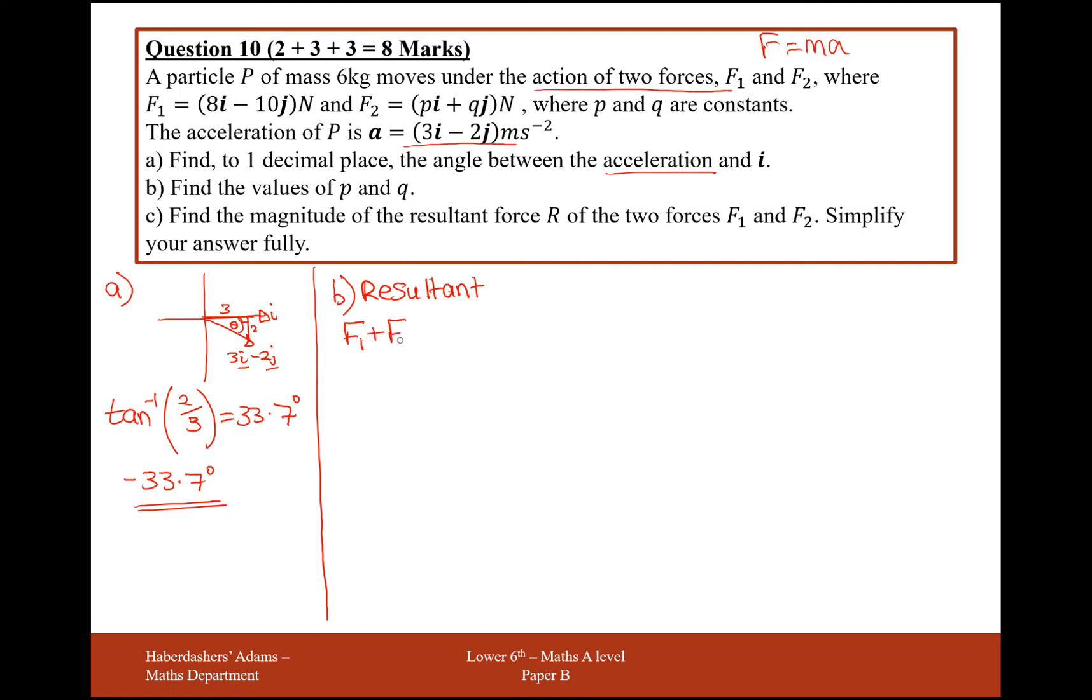So F1 add F2 is going to be equal to 8I add PI. So it would be 8 add P lots of I. And then for the J part, it's minus 10 add a Q. So I'll make that Q minus 10J.